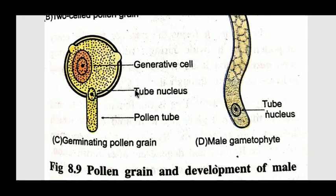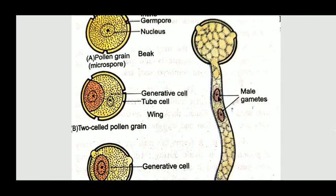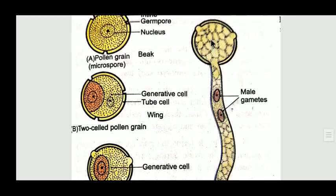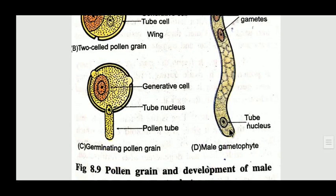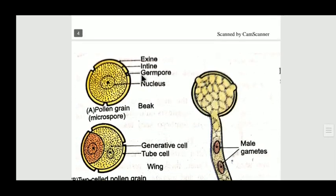The pollen tube is formed by the innermost layer due to the pressure of the increased cytoplasm volume inside the vegetative cell. This pollen tube is followed by the tube nucleus. The stigmatic secretion inside the vegetative cell also creates pressure on the generative cell, and now the generative cell divides by mitosis into two cells. In this way, two non-motile haploid male gametes are formed inside the pollen tube. The tube nucleus remains attached at the bottom of the tube.